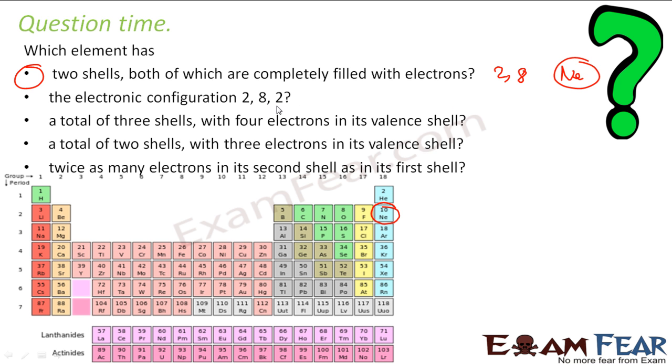Electronic configuration of 2, 8, 2. This atomic number of 2 plus 8 plus 2 is 12. Atomic number 12 is magnesium. So magnesium is my answer.